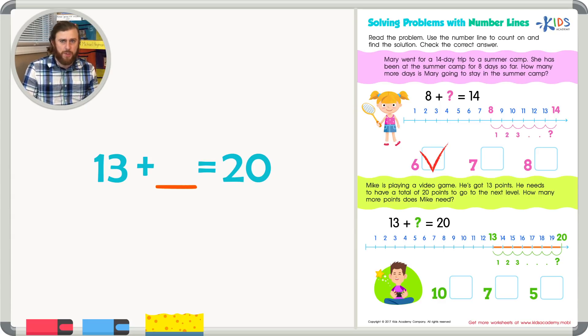How many jumps or how many numbers are in between 13 and 20? Let's count them one by one. 1, 2, 3, 4, 5, 6, and 7. And if we input 7 into our equation and add 13 plus 7, we would get 20. So that's a good number sentence. Let's go ahead and check the number 7 as our correct answer.